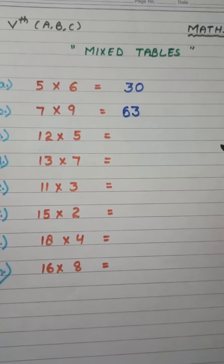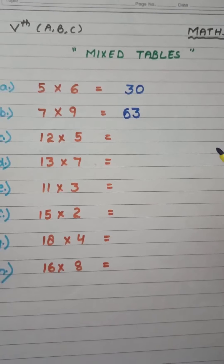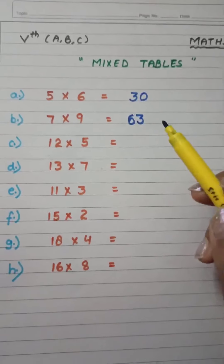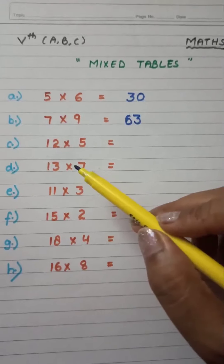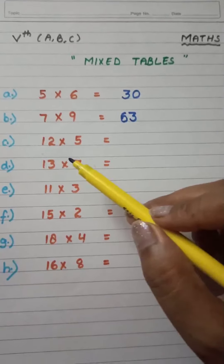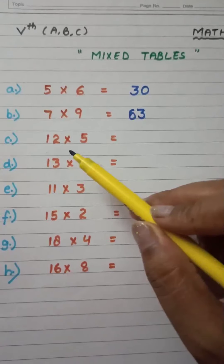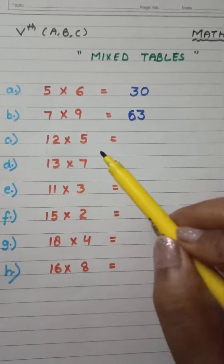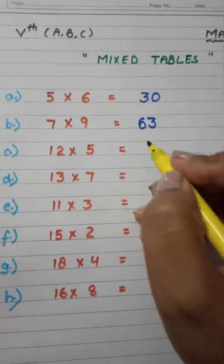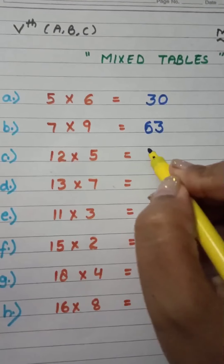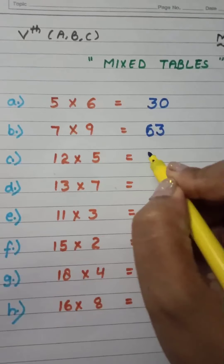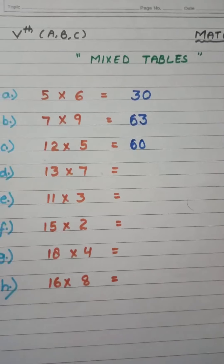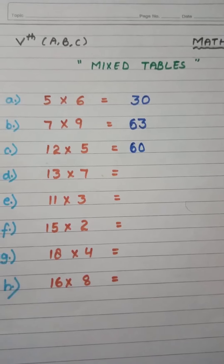Part C is twelve fives. When you read out the table of 12, twelve fives will give us 60. That is the answer.